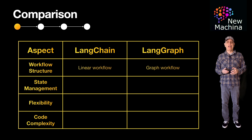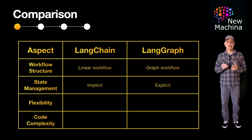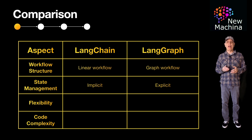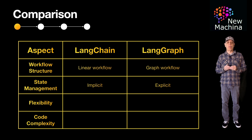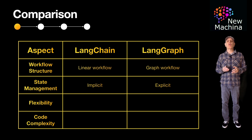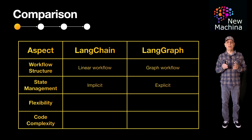The second aspect is state management. LangChain supports implicit state management. With implicit state management, LangChain automatically manages and passes relevant data, such as inputs and outputs, between different steps in a workflow without requiring explicit user-defined structures to store and track state. This approach simplifies chaining tasks, but it comes with limitations in handling complex workflows where fine-grained control over state transitions is required.